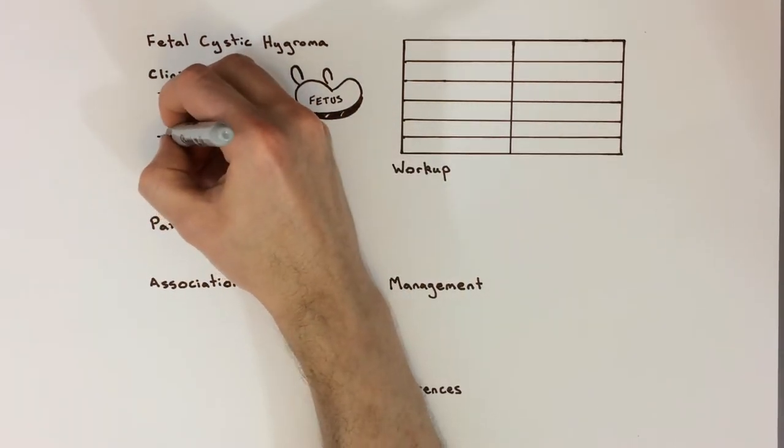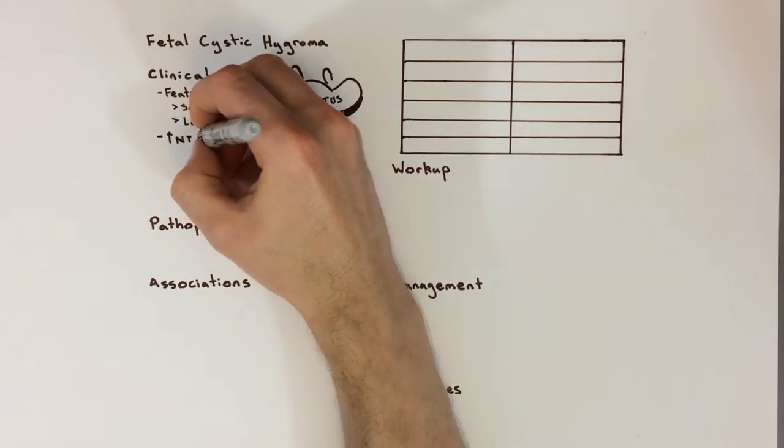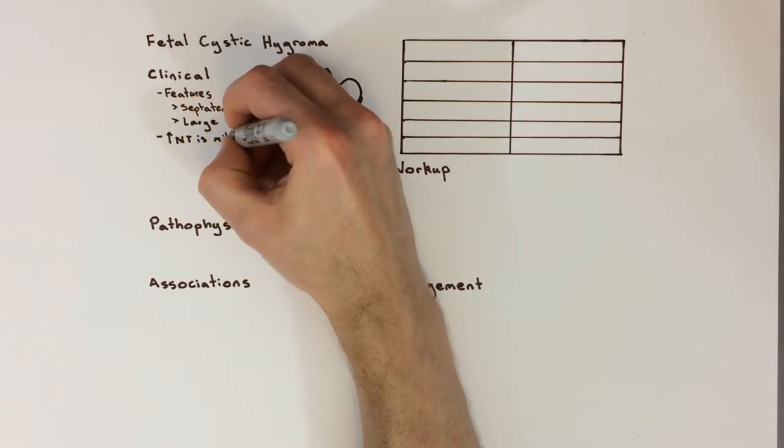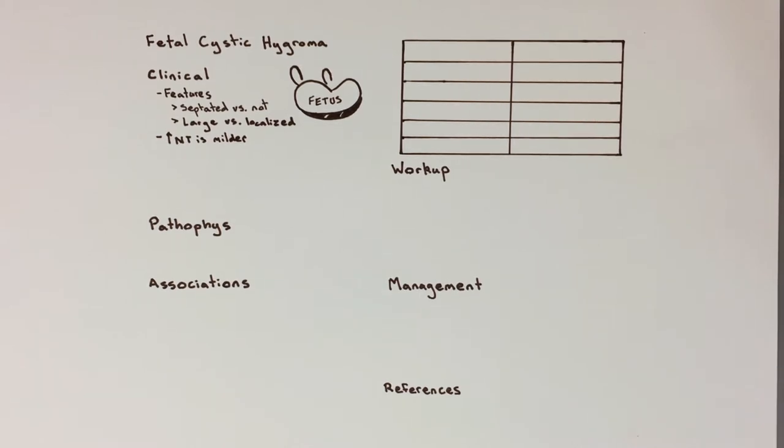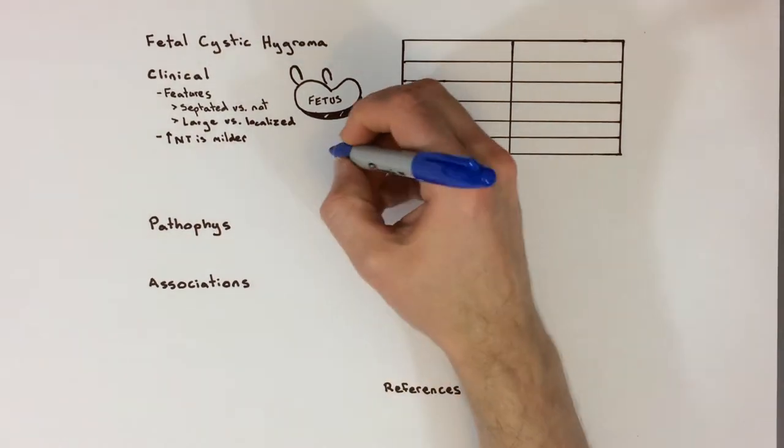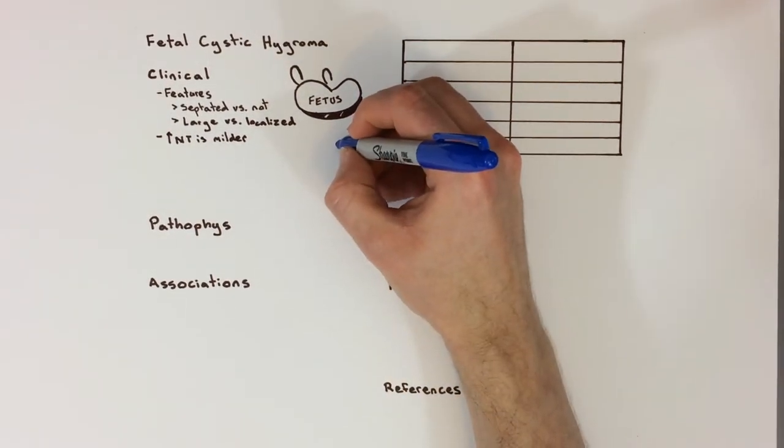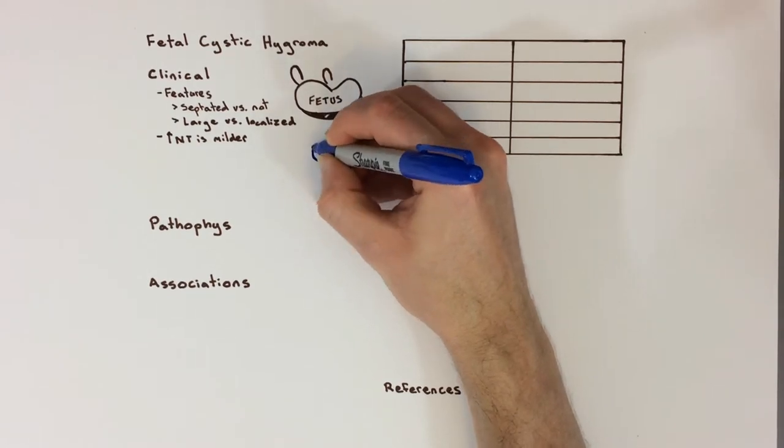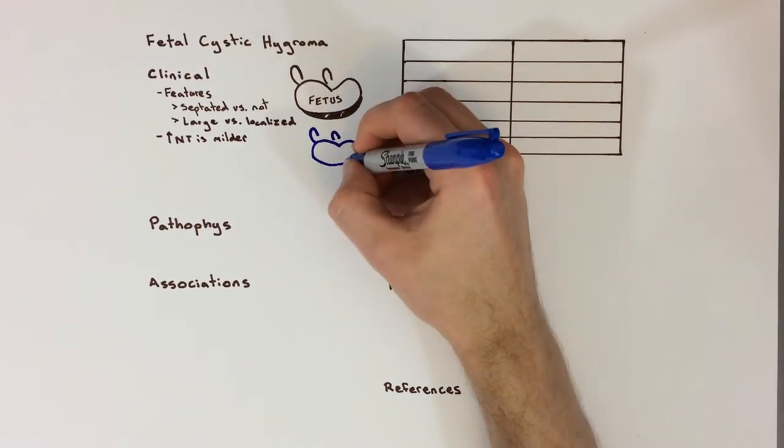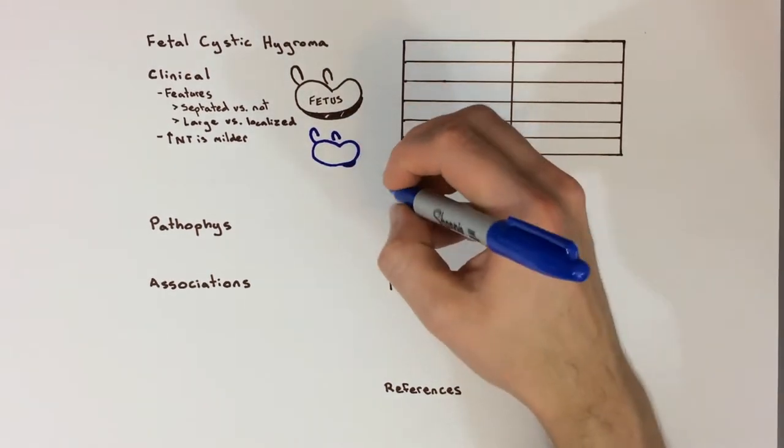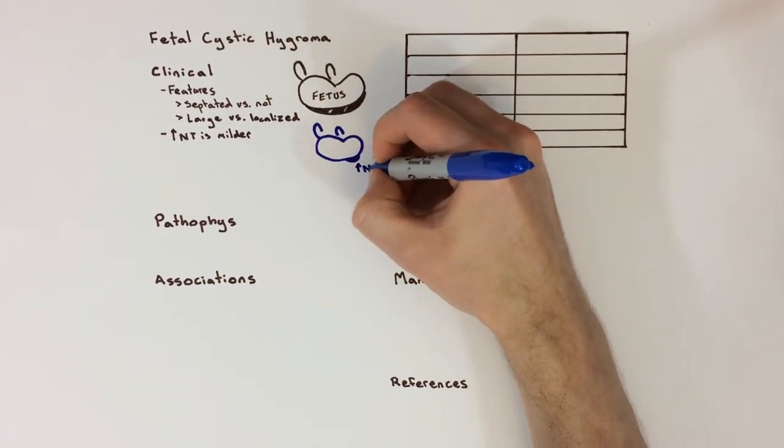A smaller swelling that's restricted only to the posterior neck may not be a cystic hygroma, but may instead be something called increased nuchal translucency, or increased NT. The reason for the two categories is that true cystic hygroma carries a worse prognosis than just increased NT. It's more often caused by a genetic defect, and more often appears in conjunction with other birth defects like heart defects or fetal or neonatal death.